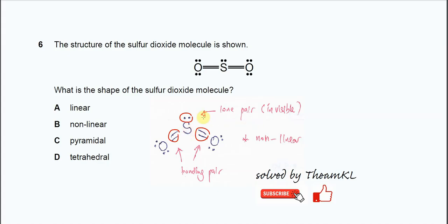Because this lone pair is actually invisible, what we use to form the shape or the geometry of a molecule is the atoms with the bonding.